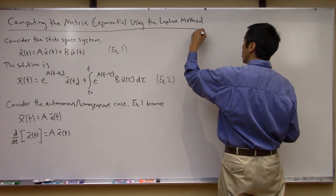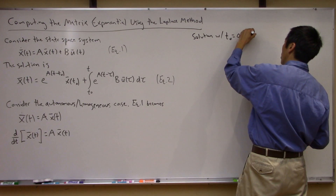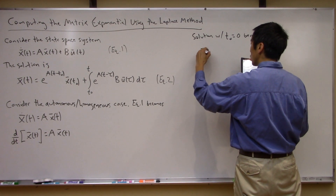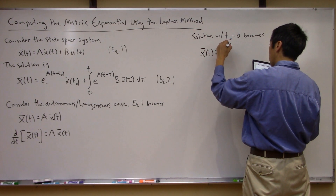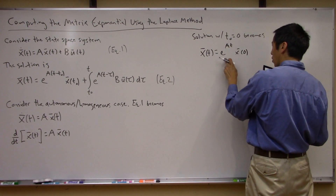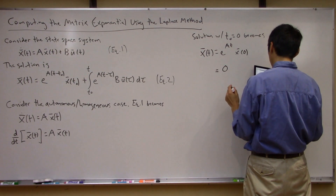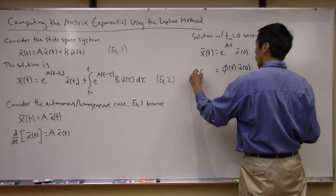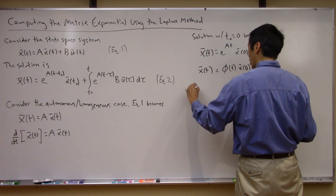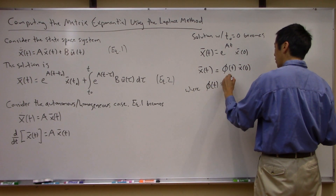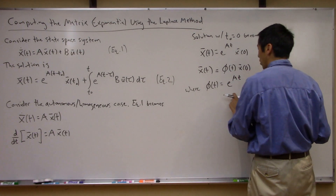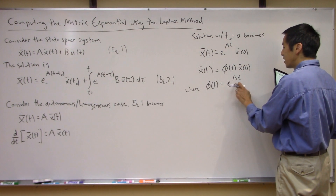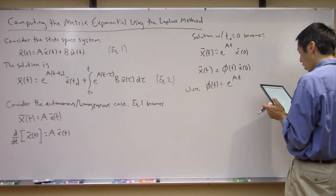The analytical solution with t₀ equals zero simplifies quite a bit. We end up with the analytical solution being e^{At} times x(0). This is sometimes referred to as your state transition matrix phi(t, 0). So you could rewrite the analytical solution as phi(t) times x(0), where phi(t) is our matrix exponential e^{At}. This is what we're looking to compute — I really want to compute this matrix exponential, this state transition matrix.